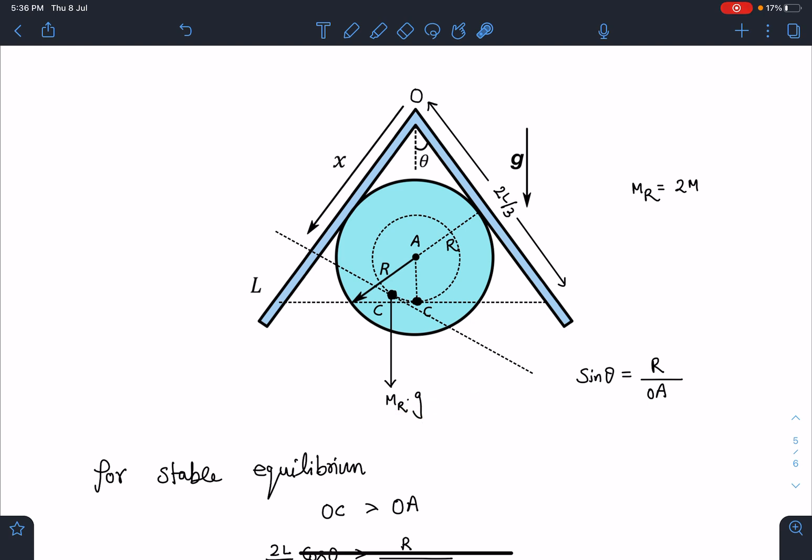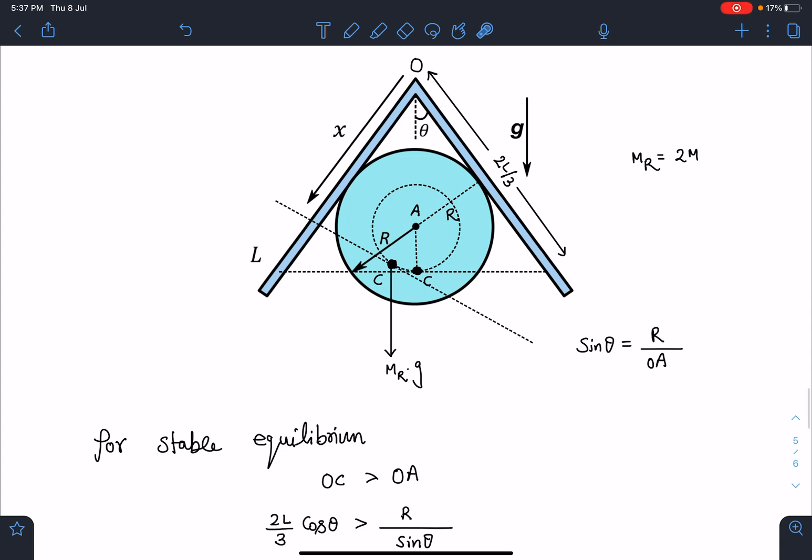It will bring it back to this side. In this case we can say torque is restoring in nature. If we displace it right side, it is going to bring it towards the mean position again. So this will be stable equilibrium. In this case I can say for stable equilibrium, distance of this A, A is the center of the cylinder, A and O, it should be less than the distance between point O and combined center of mass of these two rods.